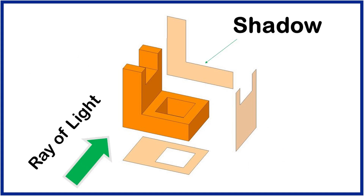That means it will create a shadow on the backside as shown. Second case: assume that this part is in 3D space. Assume that rays of light are coming from the front side where the part is located. All rays are perpendicular to the part surface as shown. This surface will not transmit these rays and will create a shadow on the backside as shown.